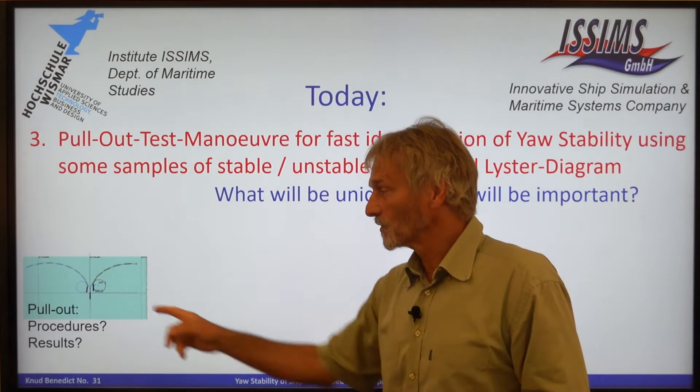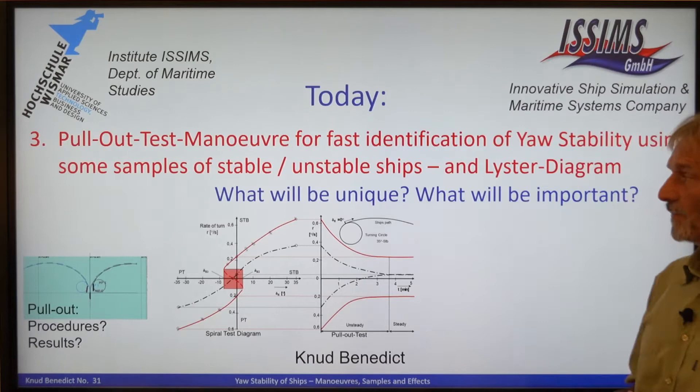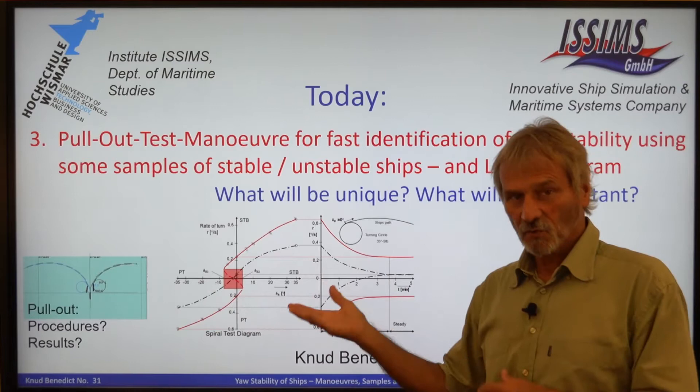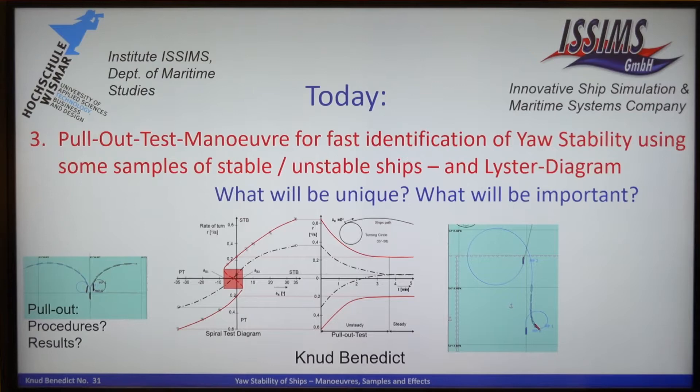The first item is to show the procedures of the pull-out test maneuver and the typical results. Second, I will compare the pull-out test maneuver with the spiral test diagram which I showed you last time, and compare it with the time history of the pull-out maneuver. Then I will talk about the so-called effect of the neutral rudder angle.